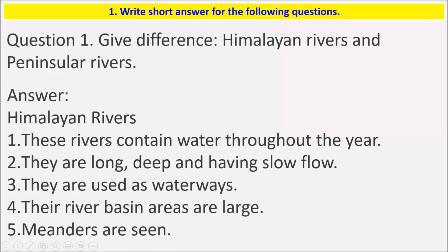Himalayan rivers: these rivers contain water throughout the year. They are long, deep, and have slow flow. They are used as waterways. Their river basin areas are large. Meanders are seen in Himalayan rivers.